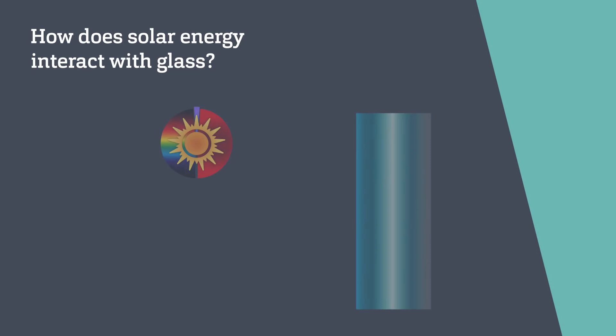Let's review how solar energy interacts with glass. When a ray of electromagnetic energy strikes a glass pane, some of the energy may be reflected, some may be absorbed, and any remaining energy will be transmitted.